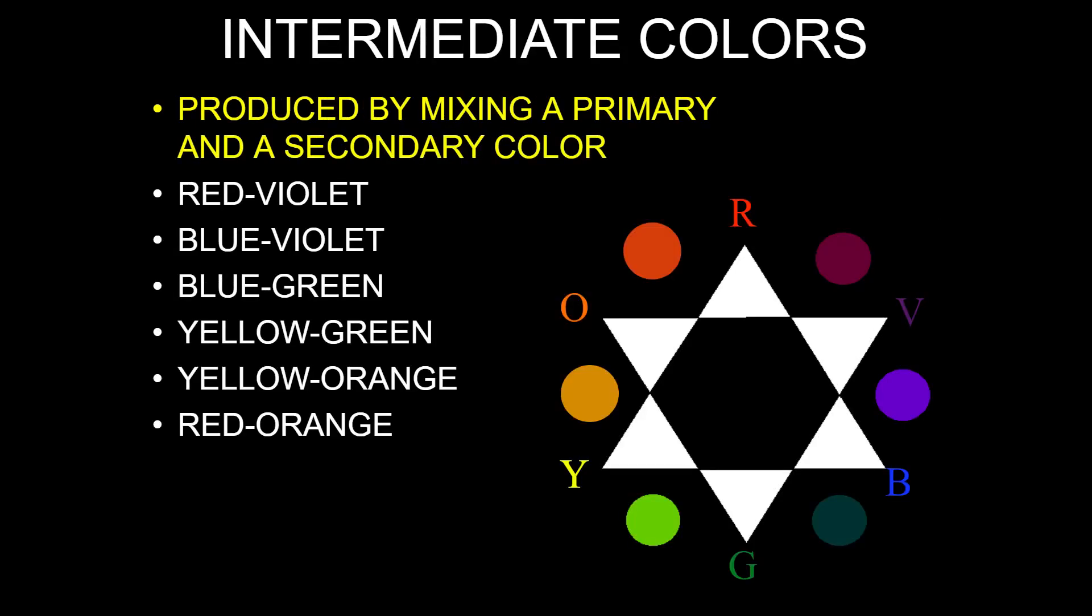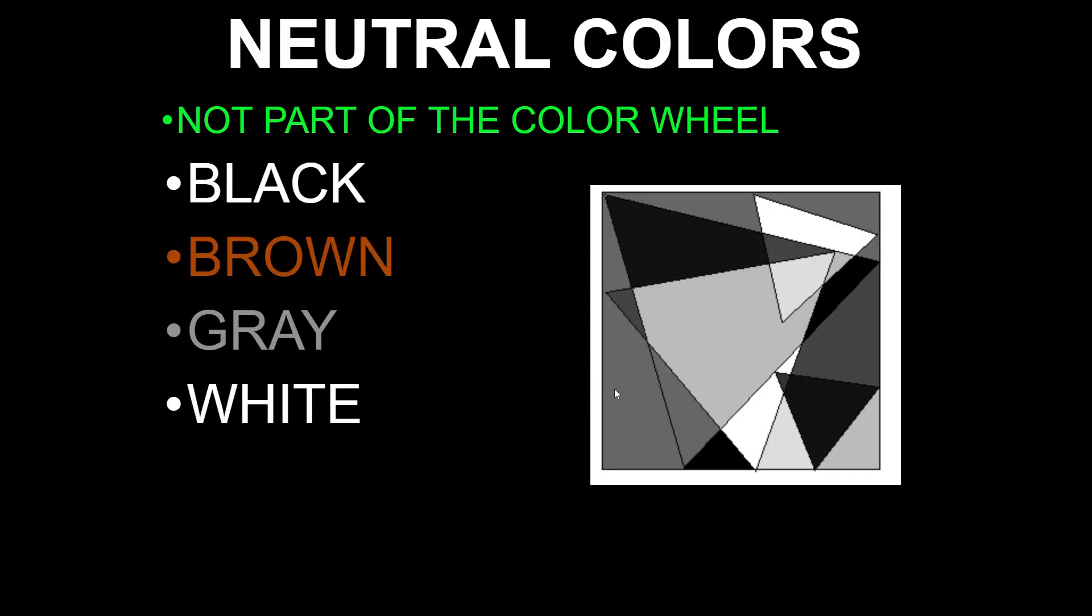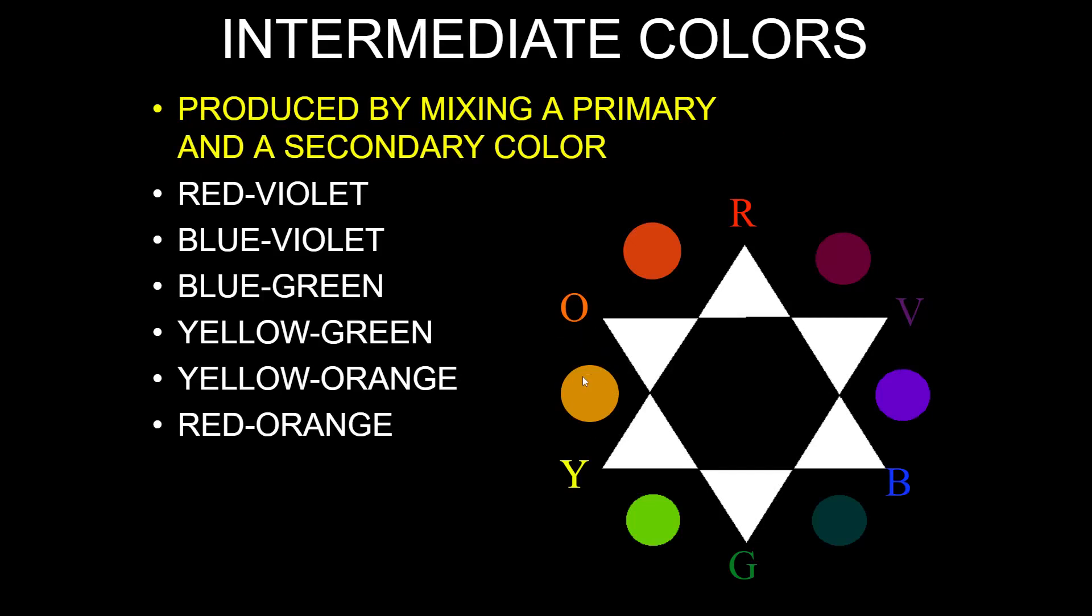Intermediate colors, also called tertiary colors—I want to go ahead and use those two words interchangeably here—are produced by mixing a primary and a secondary color together. If we look at our beautiful chart here, we see orange on the left side of your screen and red at the top. We mix them together and you get an orange-red.